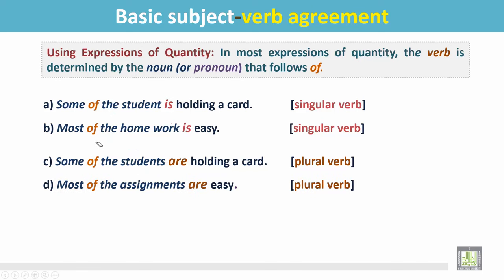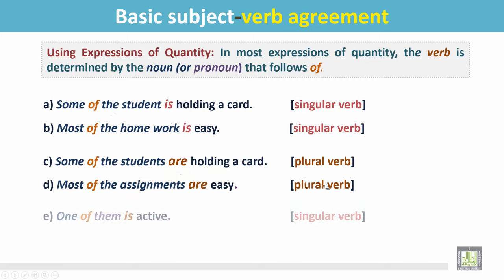'Most of the assignments are easy.' In the sentence, 'assignments' follows 'of,' and since 'assignments' is a plural noun, the verb is 'are' — a plural verb.